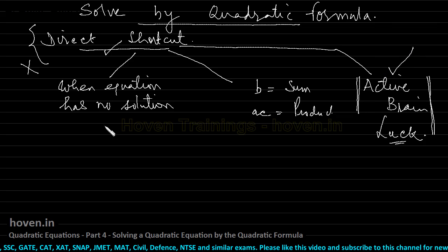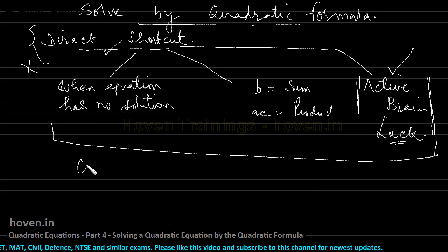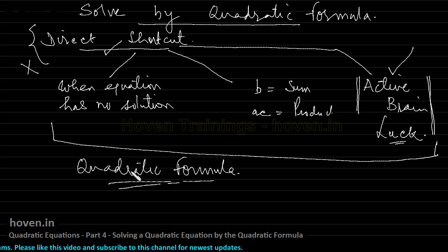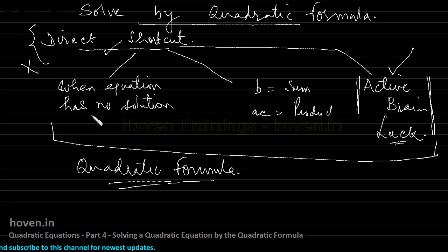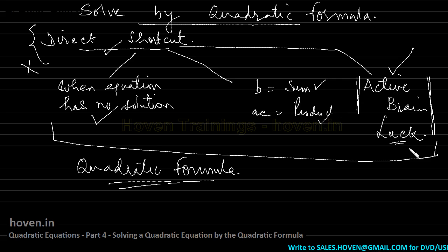Now that you are aware of these three shortcomings, I propose the method of the quadratic formula. This quadratic formula method will always tell you whether the equation has a solution or not, covering that drawback. In the case of the quadratic formula, you don't have to find any sum and product requirements, and you don't need an active brain or luck.